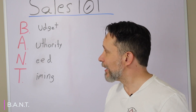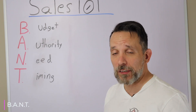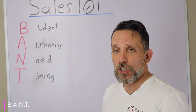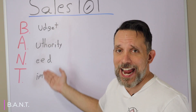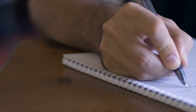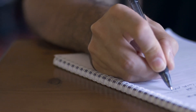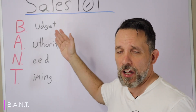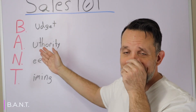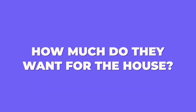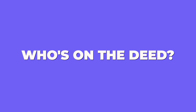It's what I use right now in my sales process, and it's how I qualify all the home sellers that I talk to. You could write this down anywhere you are — back of a receipt, a piece of paper — anywhere. Budget, Authority, Need, Timing. Budget: how much do they want for the house?